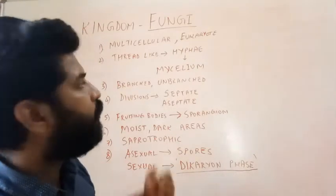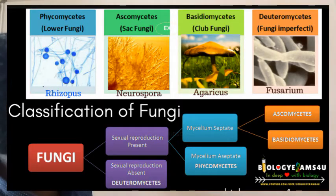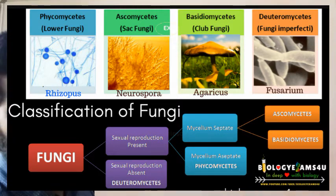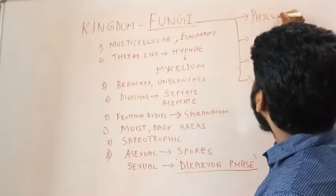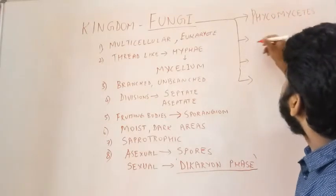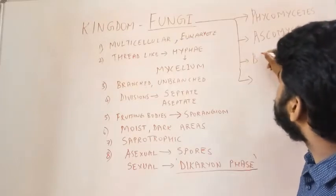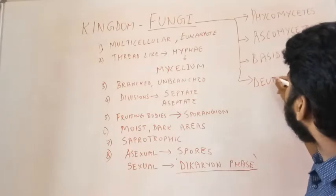Based on certain features, fungi can be studied under four phylums. The classification criteria are: the nature of the mycelium — whether branched or unbranched, and if branched whether septate or aseptate — the nature of the fruiting body, and whether it has a sexual reproductive phase. Kingdom Fungi is further divided into four phylums: Phycomycetes, Ascomycetes, Basidiomycetes, and Deuteromycetes.